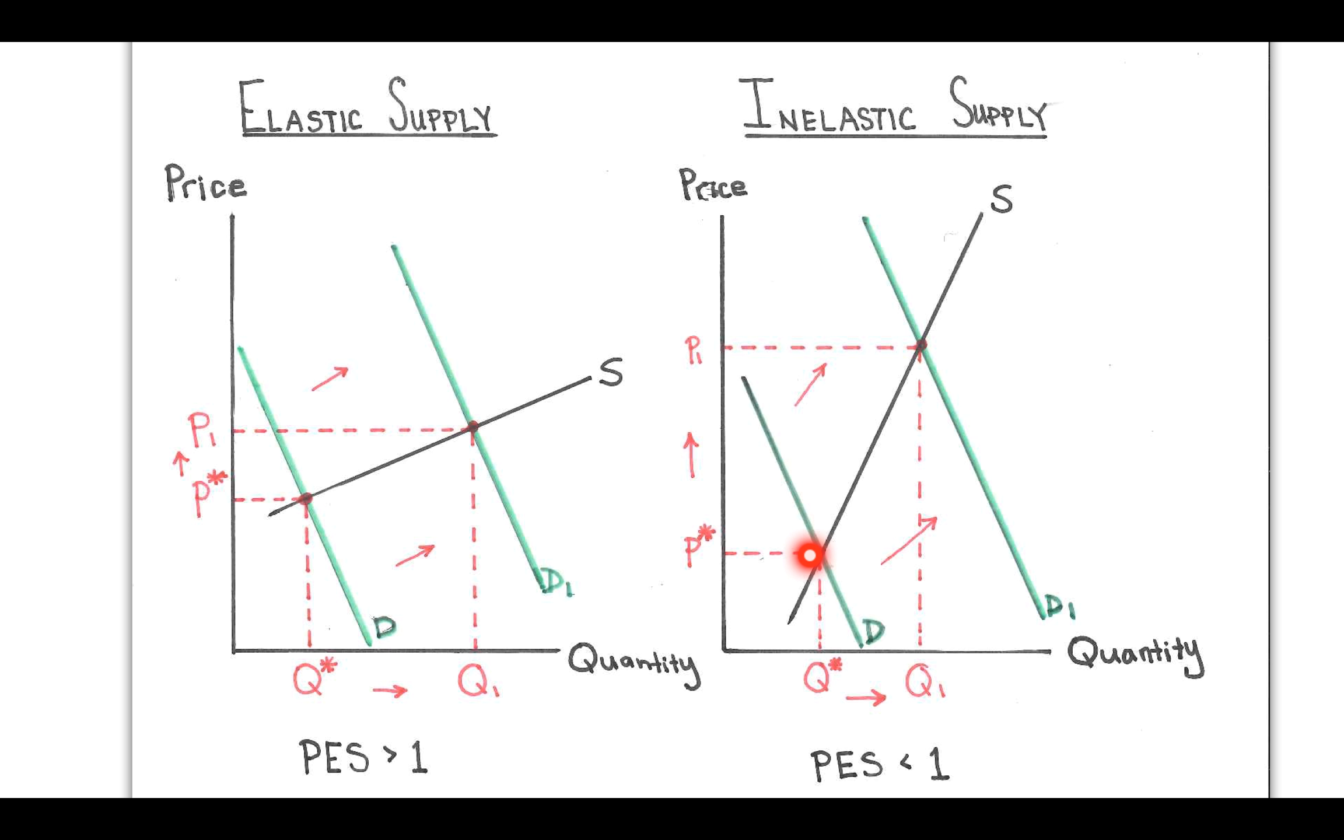This ensures that when the examiner takes a look at your problem, they can identify what change you've made very clearly. So you'll see our final result is the price of P1 and an increase in quantity supplied of Q1.